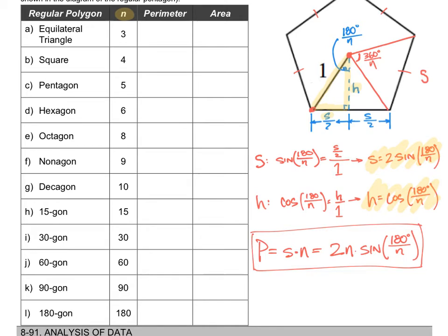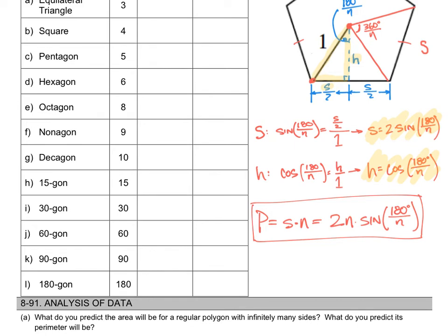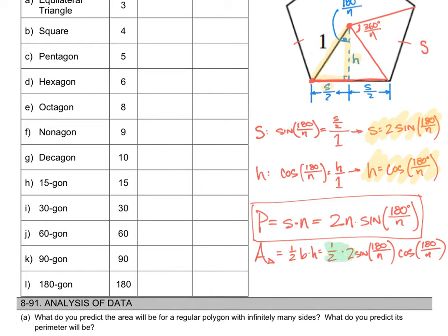Area is a bit trickier. First I need the area of one central triangle: one-half times base times height. The base is the full s = 2·sin(180/n), and the height is h = cos(180/n). So area of one triangle is (1/2)·2·sin(180/n)·cos(180/n). The one-half and two cancel, giving sin(180/n)·cos(180/n) for one triangle.